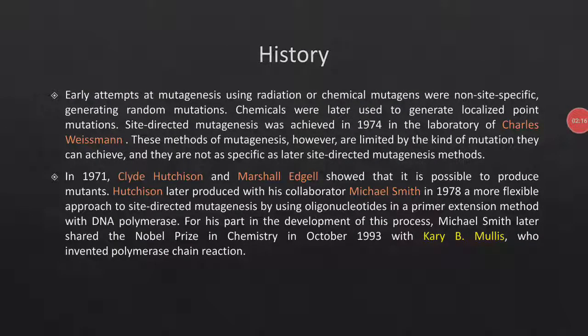The history of site-directed mutagenesis: Charles Weissmann was the first scientist who used site-directed mutagenesis in 1974, but it was not specific. Michael Smith invented oligonucleotide-based site-directed mutagenesis in 1978. Kary Mullis invented PCR. Both Michael Smith and Kary Mullis obtained a Nobel Prize in Chemistry in 1993.